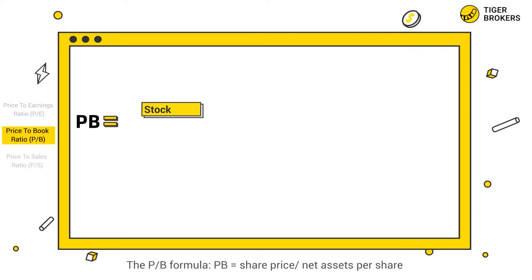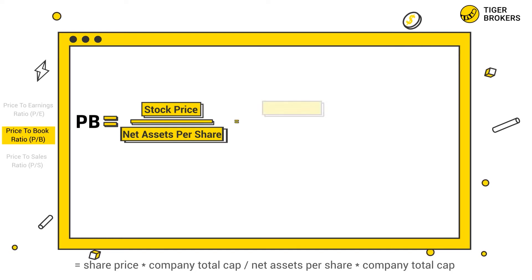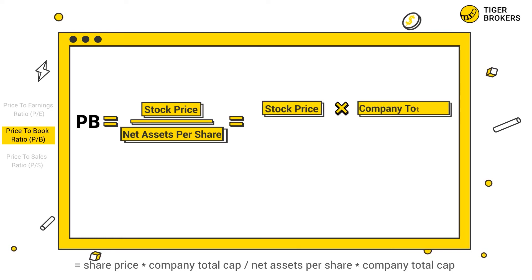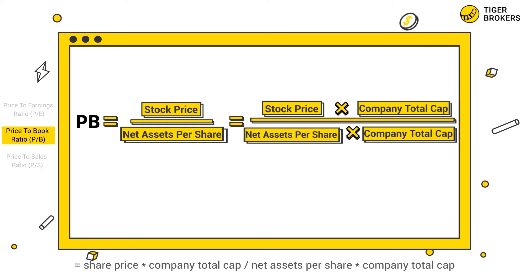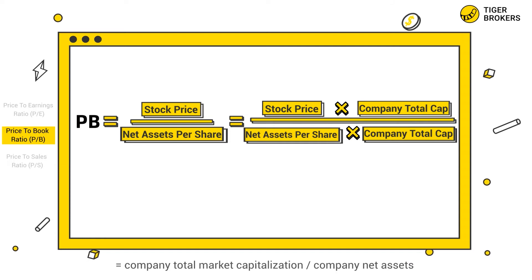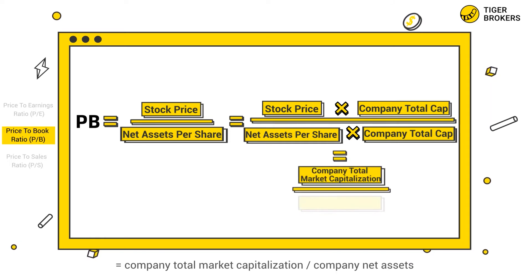The PB formula: PB equals share price divided by net assets per share, which equals share price multiplied by company total shares divided by net assets per share multiplied by company total shares, simplifying to company total market capitalization divided by company net assets.